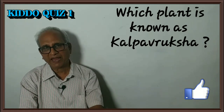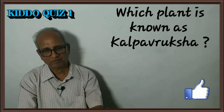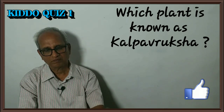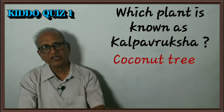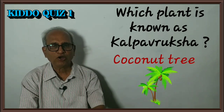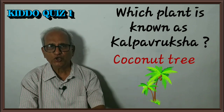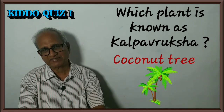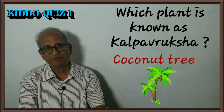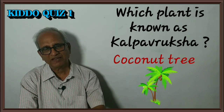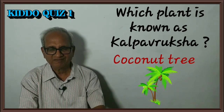Twelfth question: Which plant is known as Kalpa Vriksha? The coconut tree is useful to mankind in all possible ways, hence the coconut tree is known as Kalpa Vriksha — it is the one which grants all your wishes.